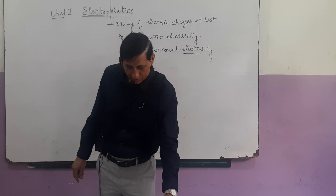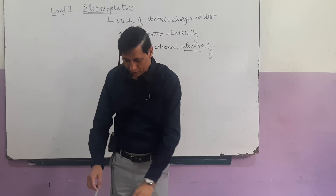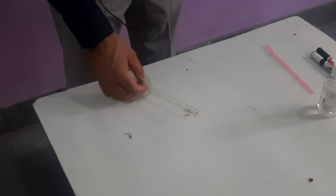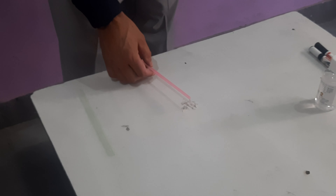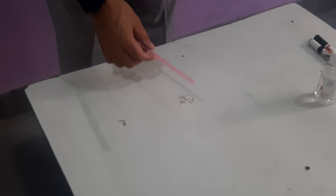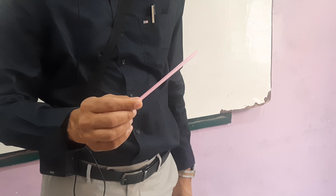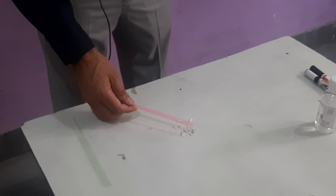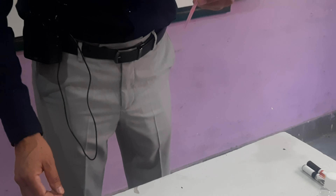To demonstrate this experiment, we have two straws and there are small bits of pieces of paper. When this straw is brought near the small bits of paper, nothing happens. Similarly, when the other straw is brought near the small bits of paper, nothing happens. But when this straw is rubbed with this cloth and then brought near the small pieces of paper, this straw attracts these small bits of paper. It means the nature of this straw is changed.